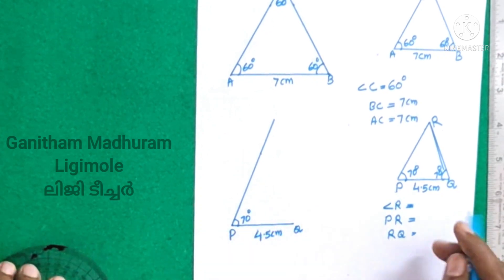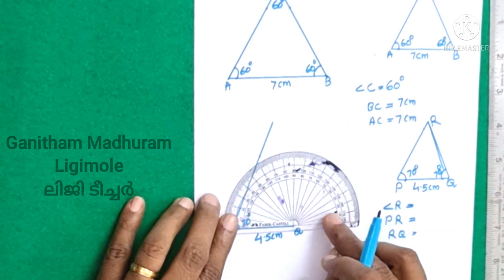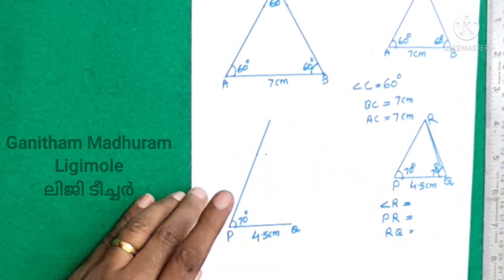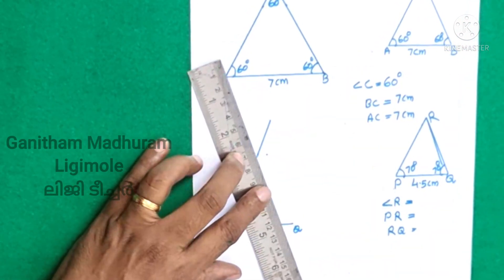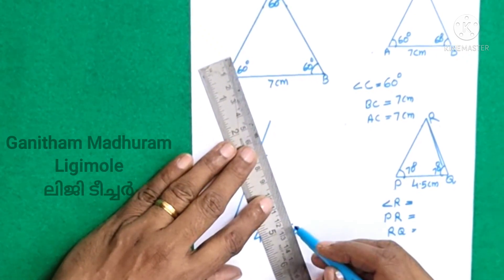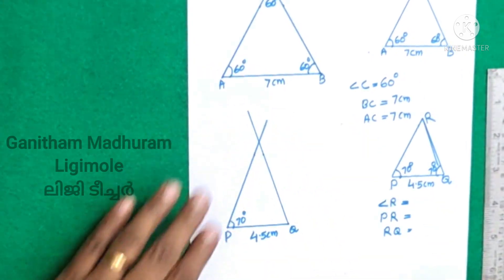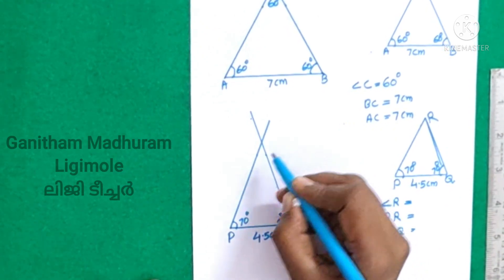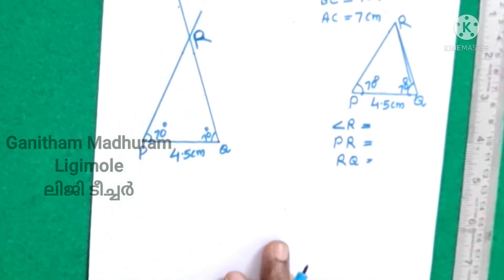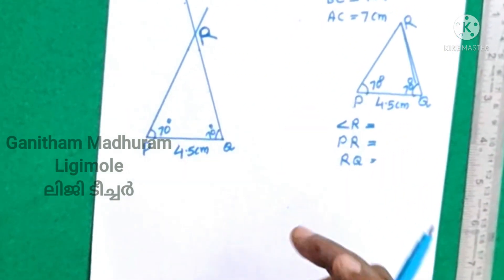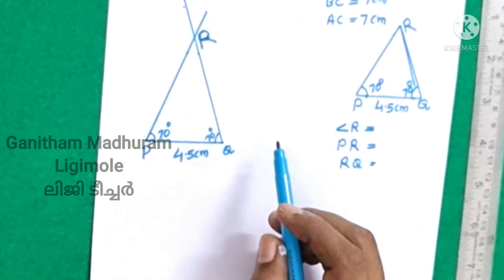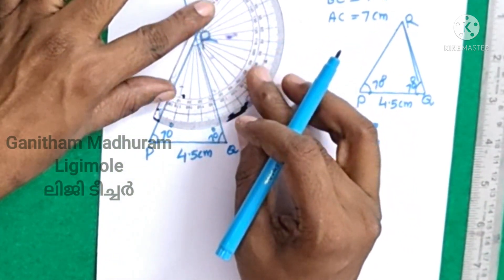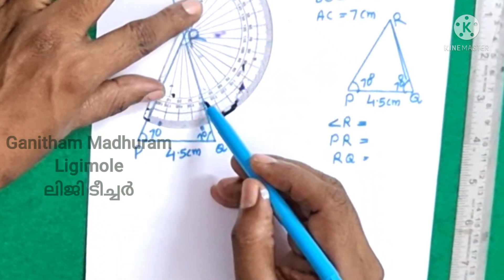70 degrees. Now put it here. It's 70 degrees. We are going to show you the angle R. It's not at all a problem. Now put it here. It's 40 degrees. Here it goes — 40 degrees. You can choose it and remember it.